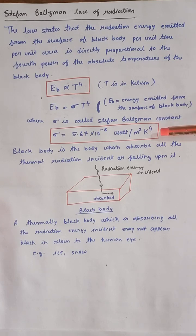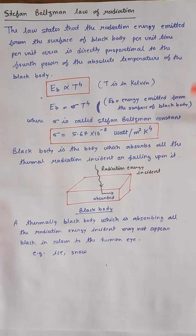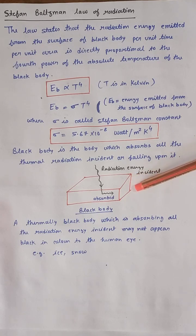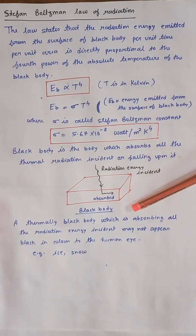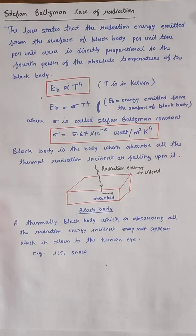Black body is the body which absorbs all the thermal radiation incident or falling upon it. Here in this figure, radiation energy is falling on the body and all the radiation energy is absorbed by this body, so this body is a black body. A thermally black body which is absorbing all the radiation energy incident may not appear black in color to the human eyes.